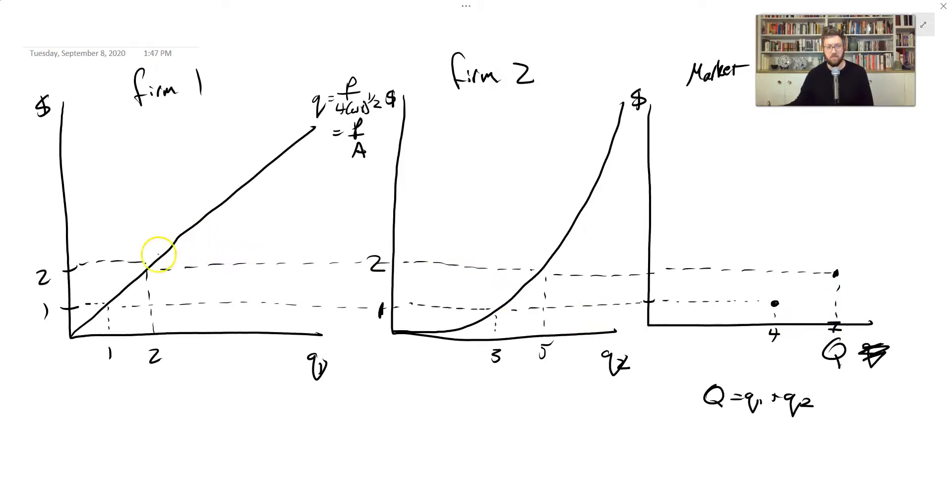And let's do, we probably don't have much room, but let's try for one more. Three. This guy's producing three. And this guy's producing, let's say that this is six. So the total market supply is now nine, which we can say is like here.